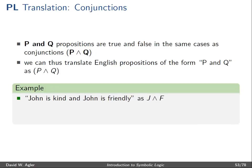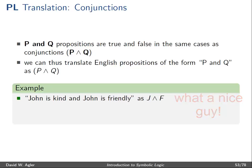For example, 'John is kind and John is friendly' can be translated into the language of propositional logic as J wedge F, where J stands for 'John is kind' and F stands for 'John is friendly.'